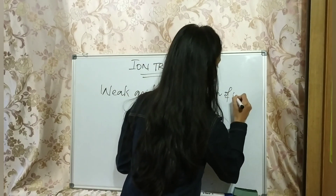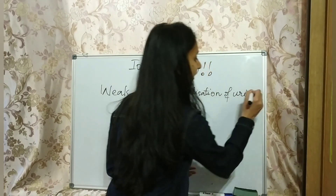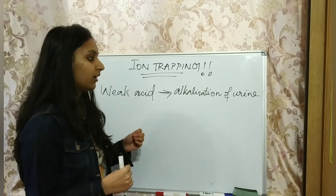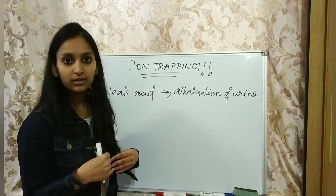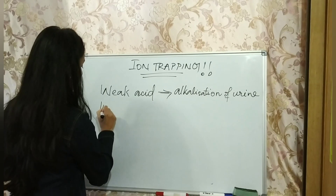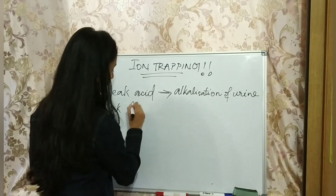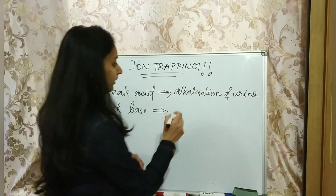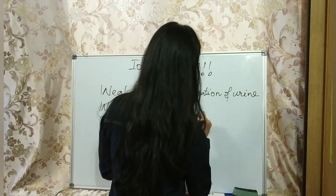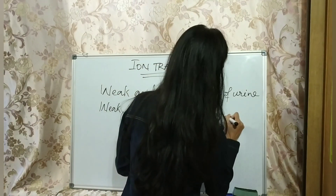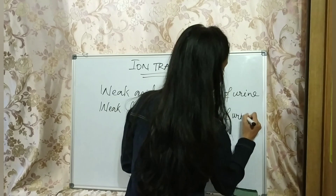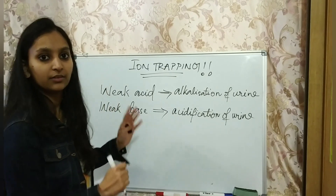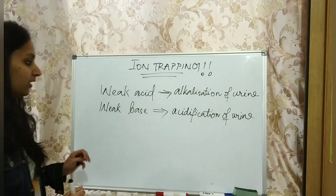Alkalization of urine means: the patient has been affected by a weak acid, so we give a base in order to excrete the weak acid from the body. If the patient is affected by a weak base — meaning the poison is a weak base drug — then acidification of urine helps in excreting it out. This important procedure is known as ion trapping.